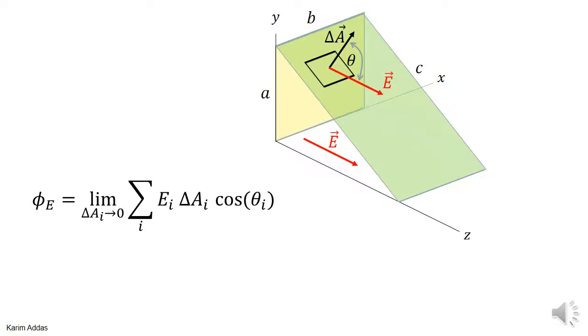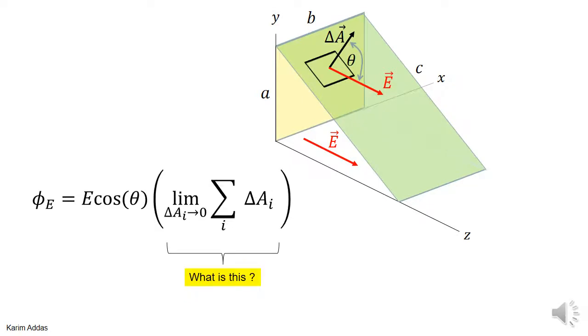Since cosine theta is constant and E is constant, we can factor both E and cosine theta out of the summation. What remains is the limit of the sum of all area elements for the inclined surface.